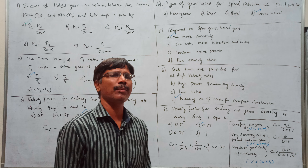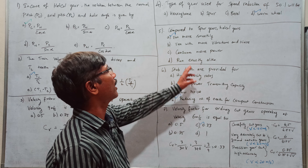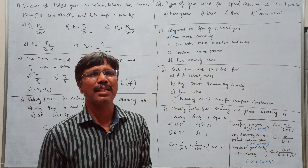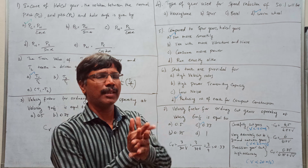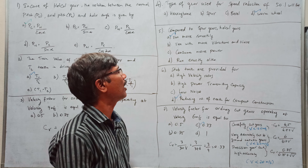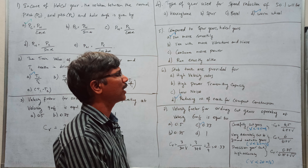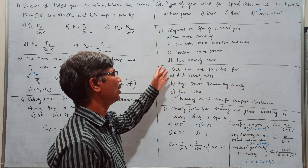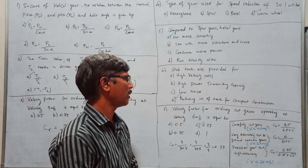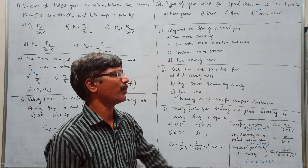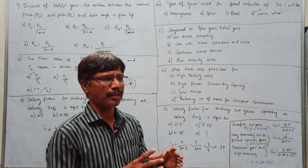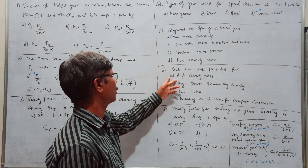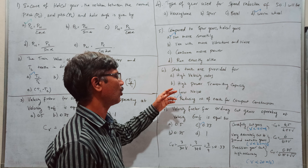Helical gears run more smoothly. Stub tooth reduces number of teeth for compact construction. All compact construction with number of teeth reduced. Stub tooth offers high velocity ratio and low noise.